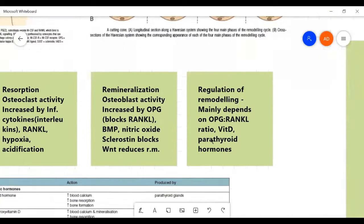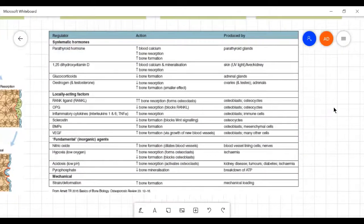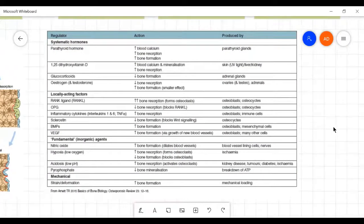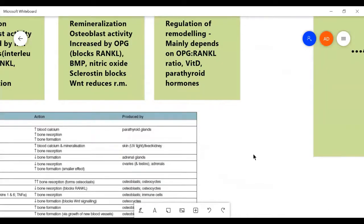Bone remodeling mainly depends on the OPG RANKL ratio, vitamin D, and parathyroid hormones. You can refer to this chart for further details. All these beautiful charts and diagrams are taken from the Berkovitz book.